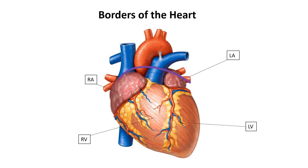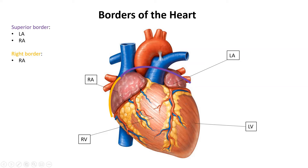The first border is the superior border — it's mostly made out of the left atrium and partly made out of the right atrium. Next is the right border, which is completely made out of the right atrium. A fun fact: the right border starts from the opening of the superior vena cava on the right atrium and goes all the way to the opening of the inferior vena cava on the right atrium.